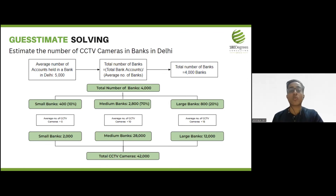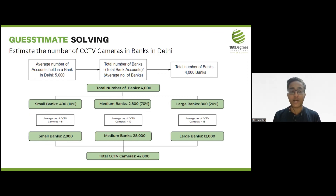This is how we actually solve a guesstimate — combining a slight approach of demand and a slight approach of supply. You can solve guesstimates on anything: the number of masks sold, the revenue from sale of momos given a time period and a place. This was just one example, and hopefully the guesstimate-solving exercise has been helpful.